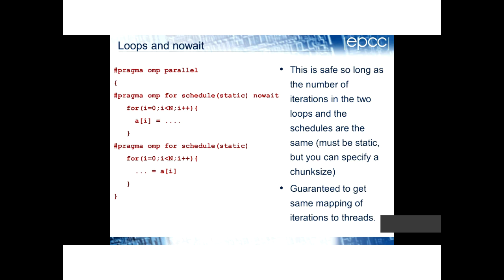As long as your schedule is static with or without a chunk size, the number of threads is the same — which is guaranteed because you're inside the same parallel region — and the number of iterations is the same, then you are guaranteed to get the same mapping of iterations to threads.